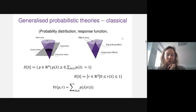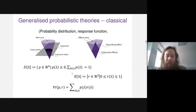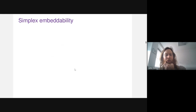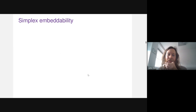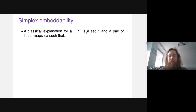Now I want to introduce a notion of classical explainability for GPTs. I don't want to just talk about when a GPT is strictly classical, but also when it makes sense to say some other GPT can be underpinned by a classical theory. This is a notion we call simplex embeddability — named because the cone of states and effects in classical theory is a simplicial cone. This will be my notion of non-classicality.